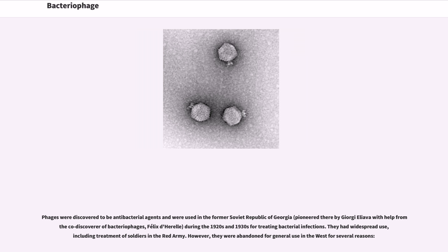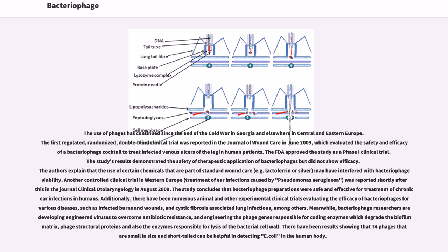The use of phages has continued since the end of the Cold War in Georgia and elsewhere in Central and Eastern Europe. The first regulated, randomized, double-blind clinical trial was reported in the Journal of Wound Care in June 2009, which evaluated the safety and efficacy of a bacteriophage cocktail to treat infected venous ulcers of the leg in human patients. The FDA approved the study as a phase I clinical trial, which demonstrated safety but did not show efficacy, possibly due to interference from wound care chemicals such as lactoferrin or silver.